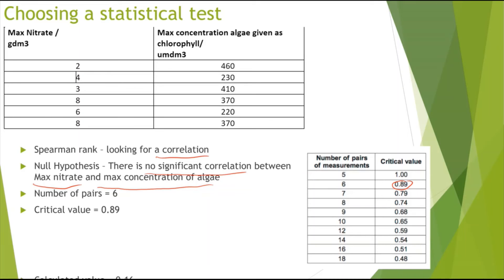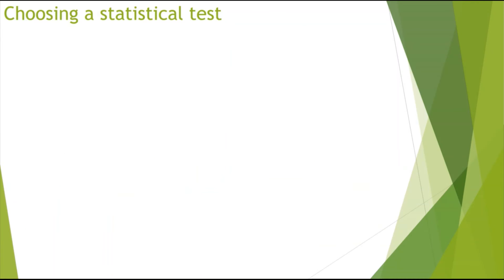Let's say the calculated value is 0.16. You won't be asked to do the statistical test in an exam because that will take a lot of time — they might just give you a calculated value like this. So you've got your calculated value and your critical value.